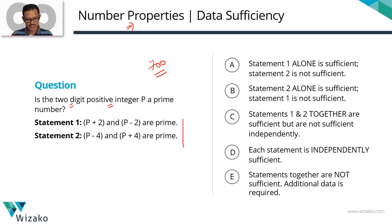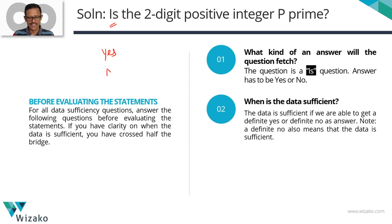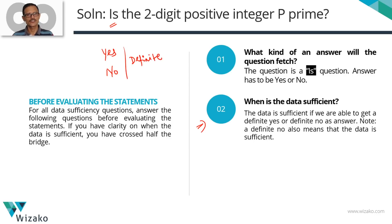Before we read the statements, let's answer the customary two questions. First: what kind of answer will this question fetch? This is an "is" question — anything that starts with a "be" verb, the answer is to be a yes or a no. When is the data sufficient? The operative word is "definite." If I get a definite yes, data is sufficient. If I get a definite no, data is sufficient. So even a definite no is good enough.